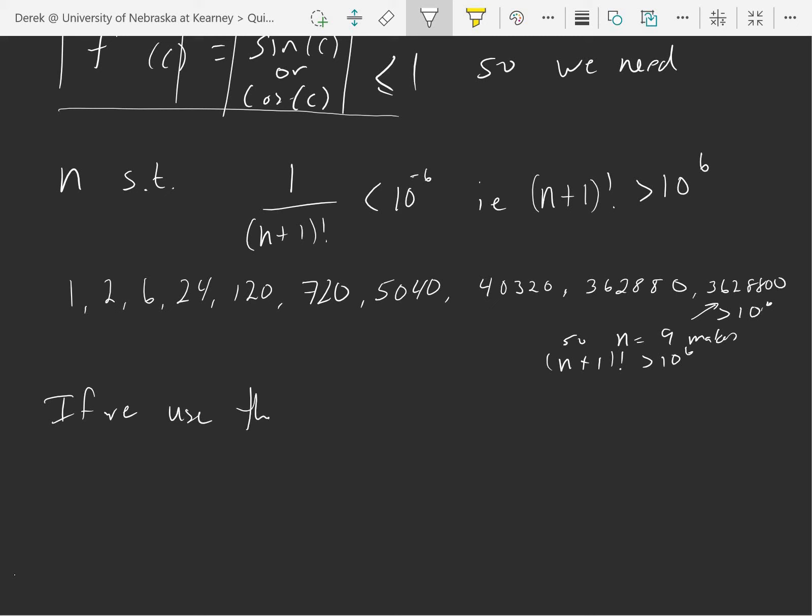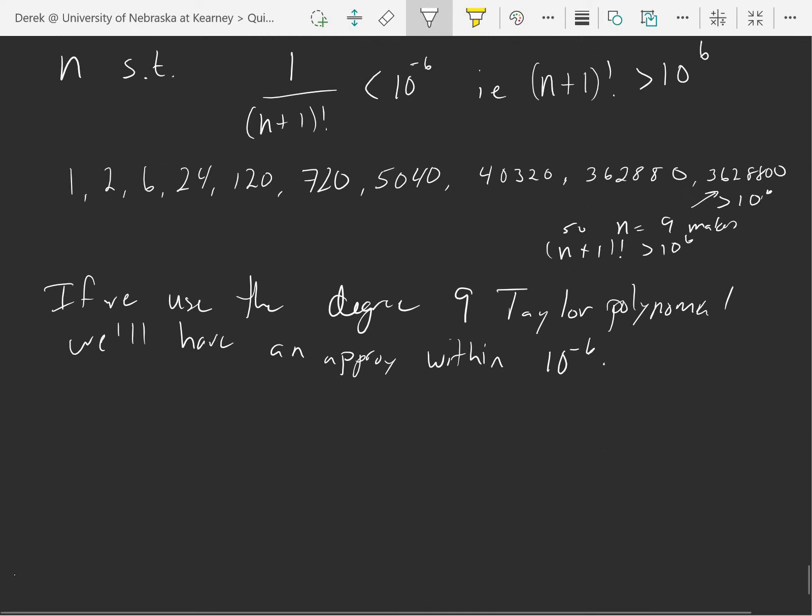If we use the degree 9 Taylor polynomial, we'll have an approximation within 10 to the negative 6th.